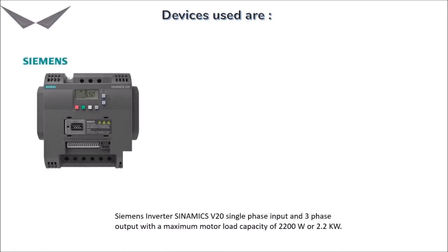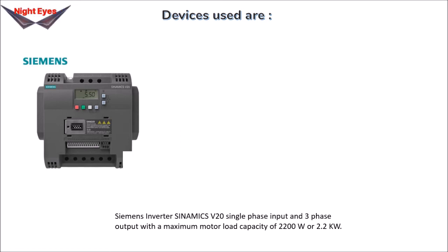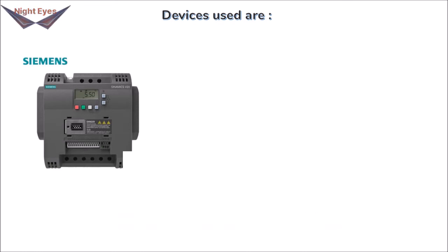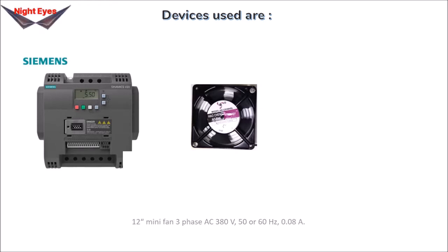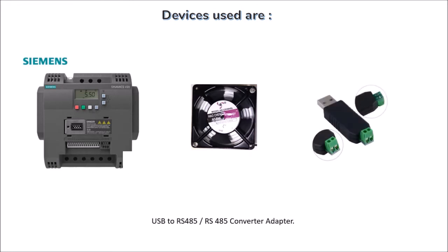The devices used in this session are: a Siemens SINAMICS V20 Inverter, single phase input and 3-phase output, with a maximum motor load capacity of 2200W or 2.2kW. A 12-inch mini fan, 3-phase AC 380V, 50 or 60Hz, 0.08A. And a USB to RS-485 or Modbus Converter Adapter.